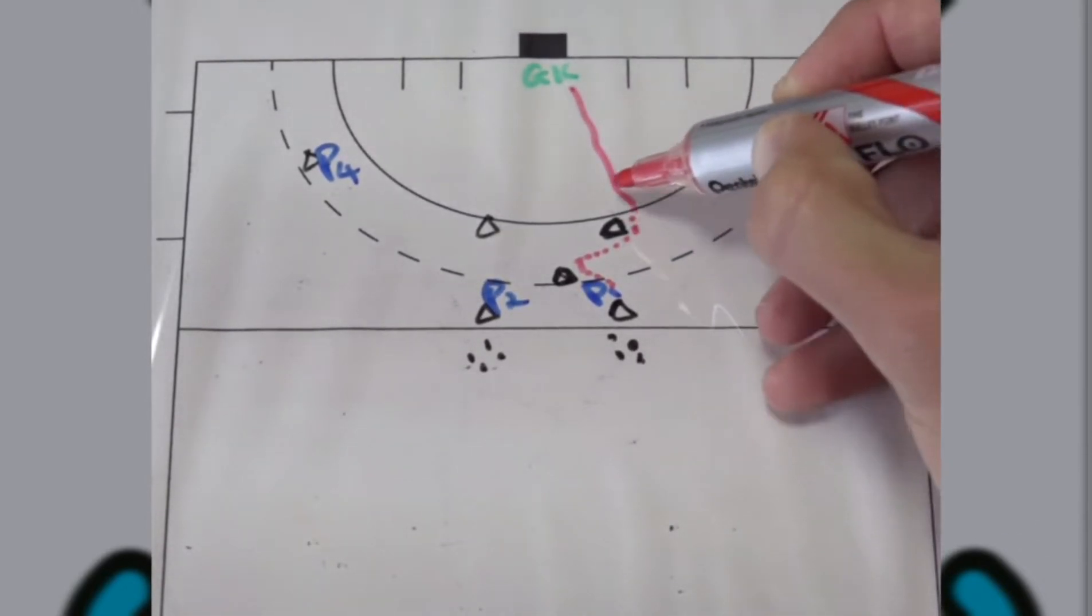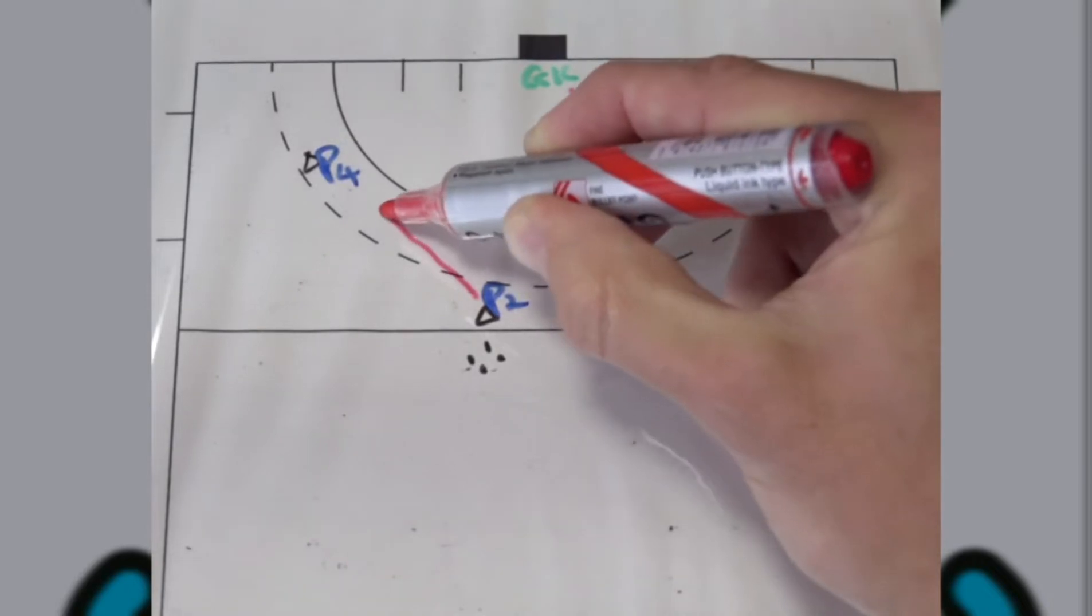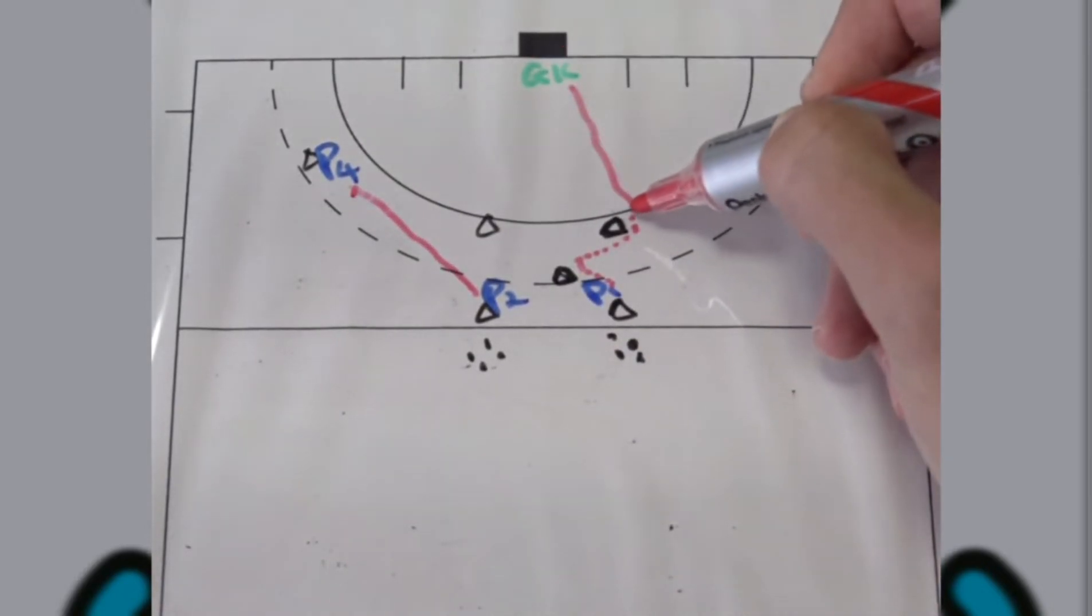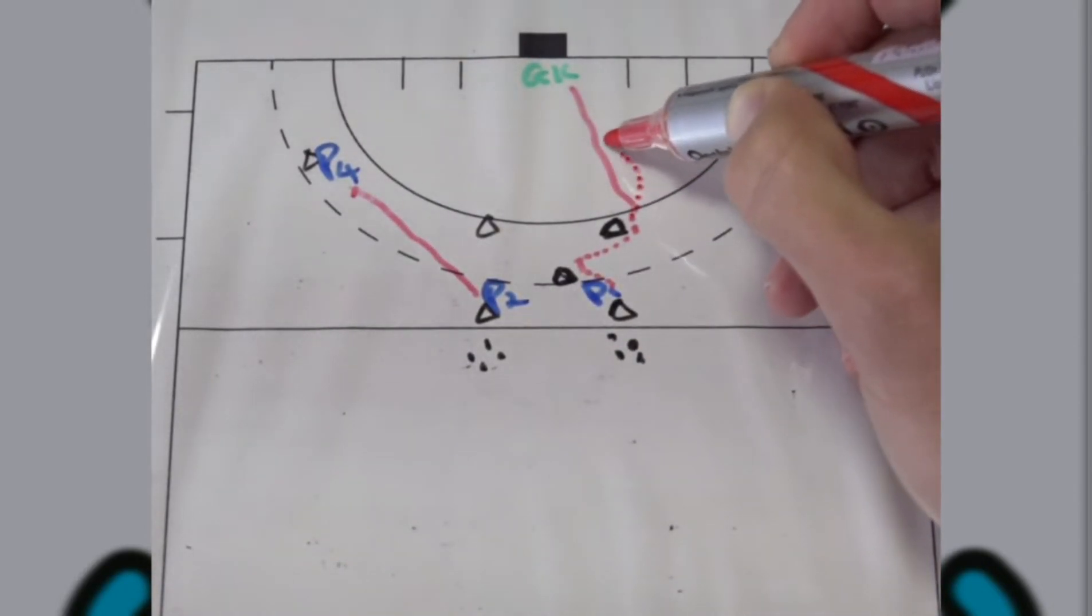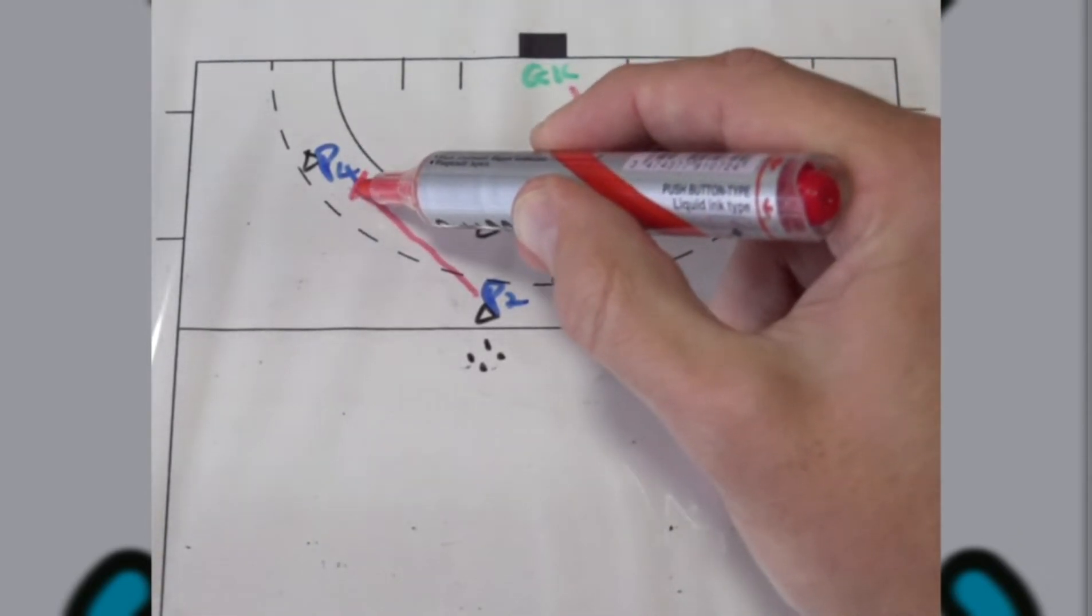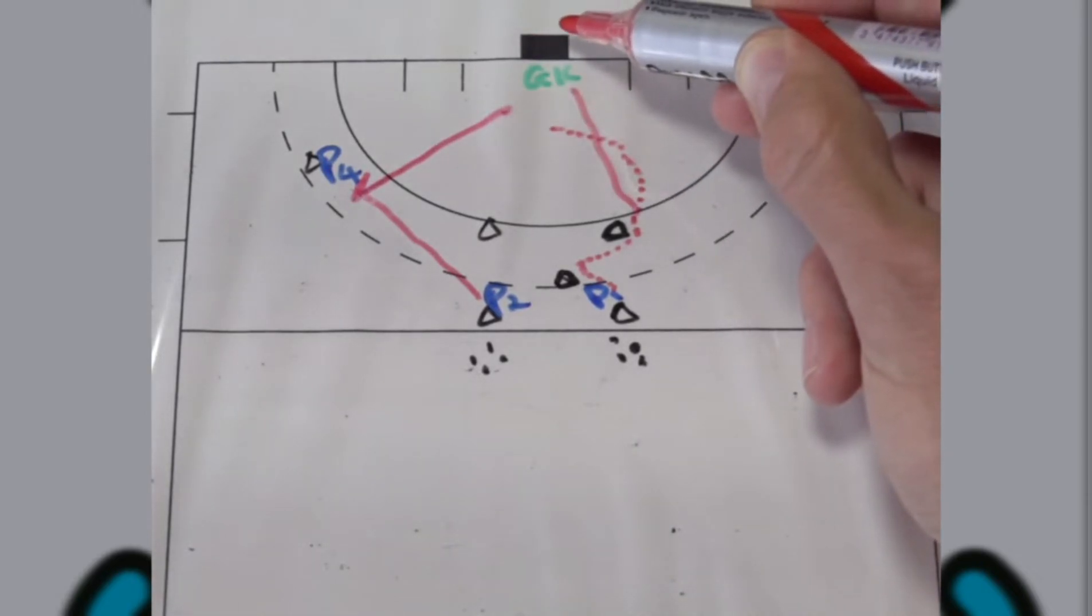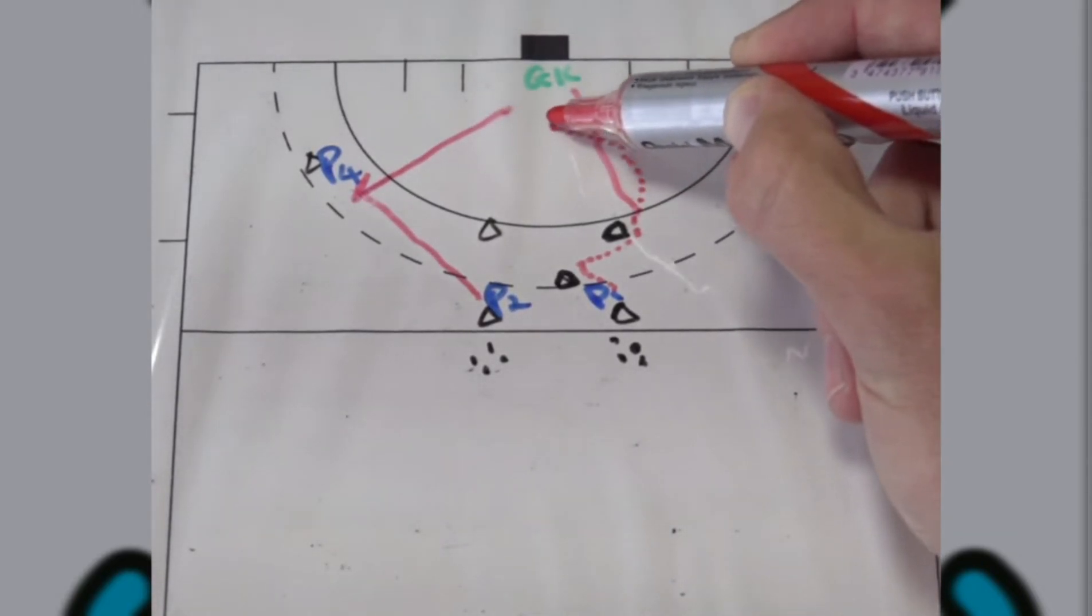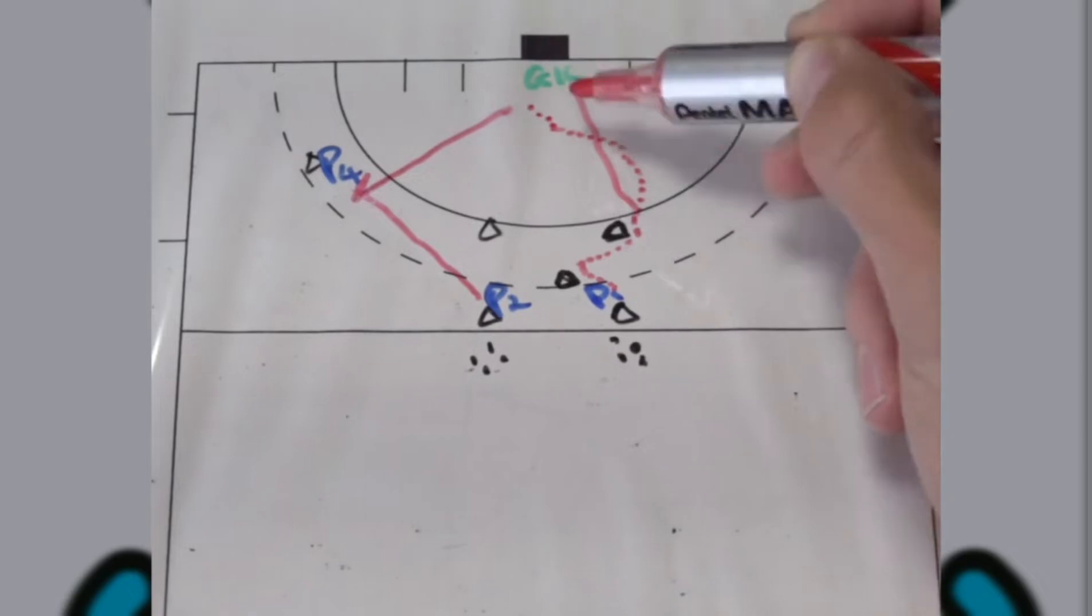As soon as player one takes a shot, player two will pass the ball to player three. Player one will then make a lead towards the P-spot. Player four will receive and then try and get the ball into that zone over there for player one to deflect the ball towards the goal.